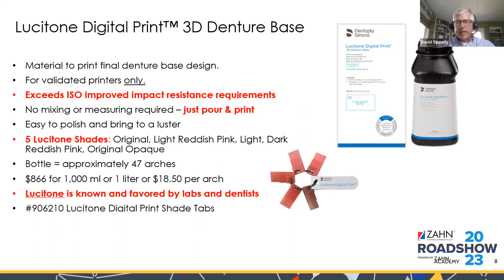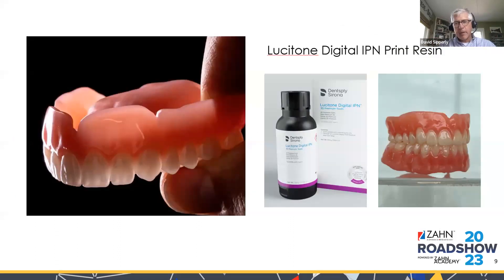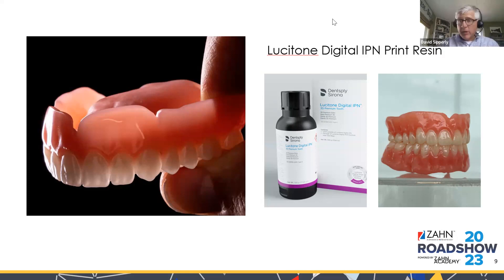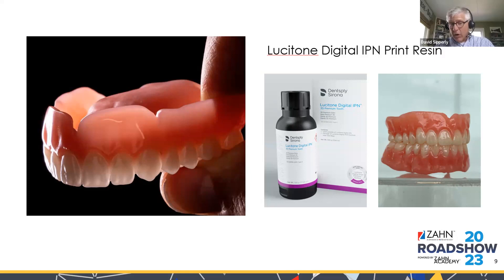We make shade tabs for the denture base as well. In July 2022 we introduced Lusitone Digital IPN Print Resin. The denture shown uses Lusitone Digital Print Denture Base IPN Resin with HC Libraries for the teeth and Fuse 3 Total. That denture is not polished — it comes out of the curing unit looking exactly like that.